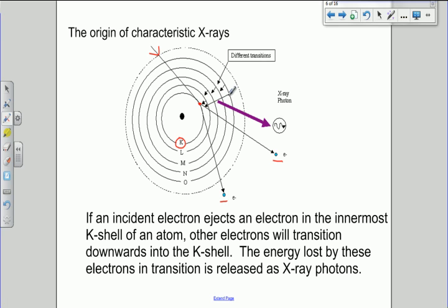Then what happens is, spontaneously, one of the electrons from the outer shells will transition downwards into the K-shell to take the place of the ejected electron which is not there anymore.